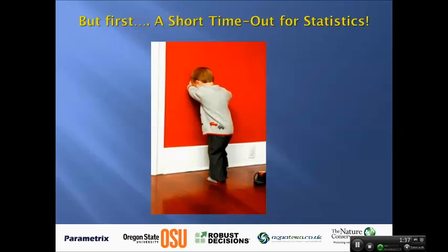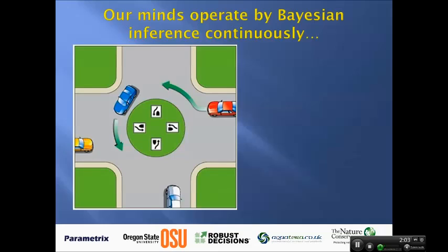We're going to jump straight into statistics, and I know you'll be disappointed, but there are not going to be pages of equations here. To understand why we're doing a Bayesian system and what Bayesian statistics or analysis methods means, we'll go directly into that first and then get into how we implement it in the system. Bayesian thinking is not just about statistics - it's really a method of solving problems we can't solve analytically.